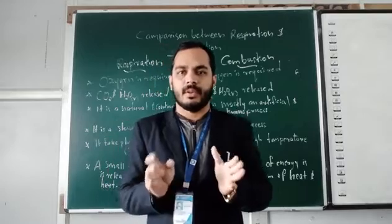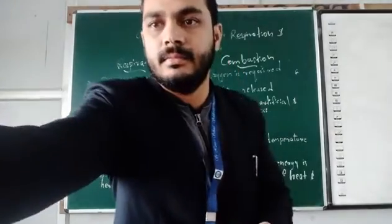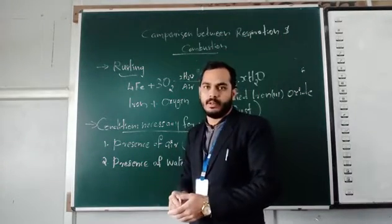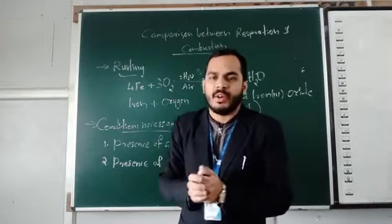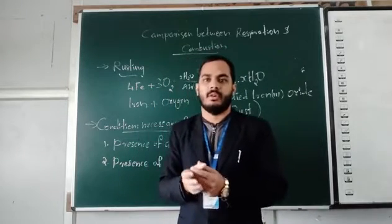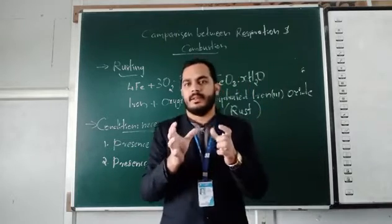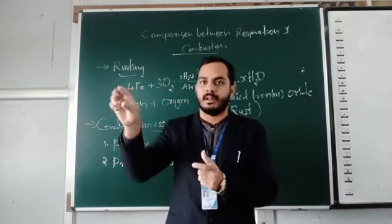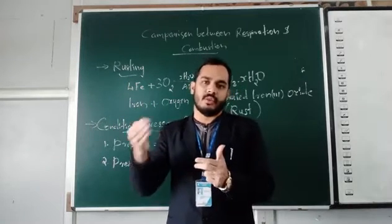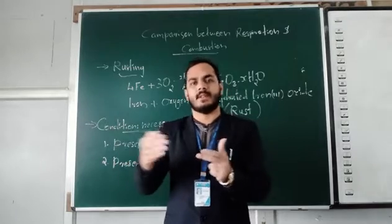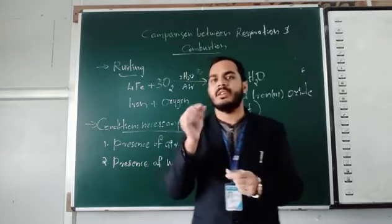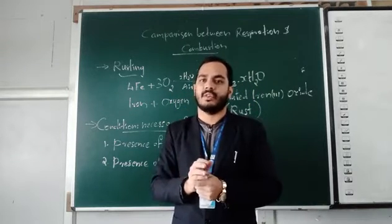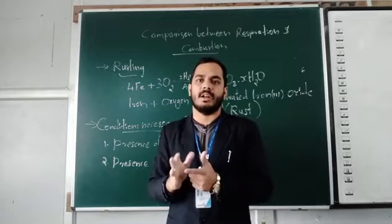Next I am going to explain the topic of rusting. Rusting, also called corrosion — when an iron object is placed outside in contact with air, it gradually develops a reddish-brown powder on its surface. That reddish-brown substance is called rust.